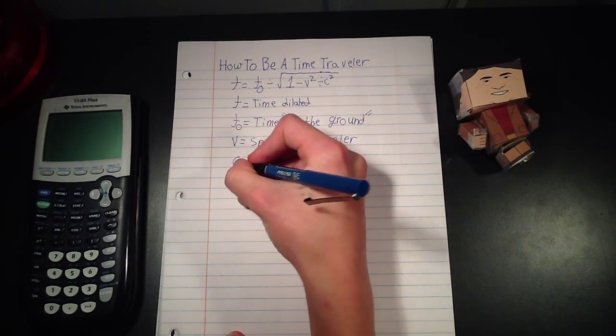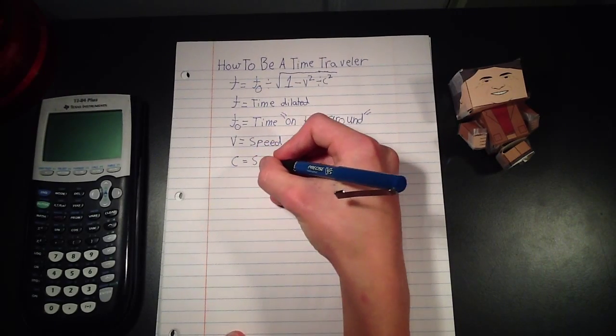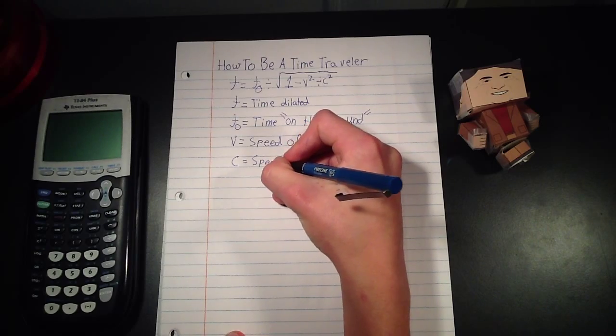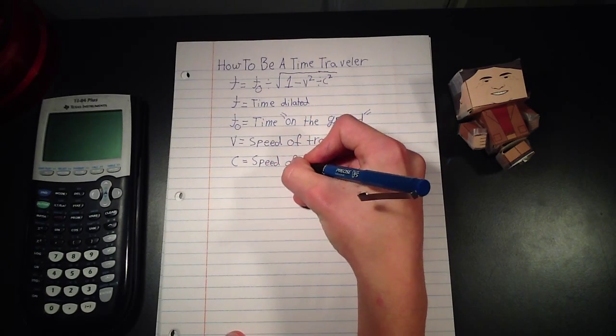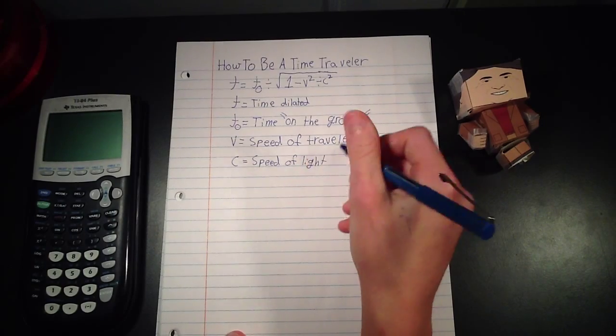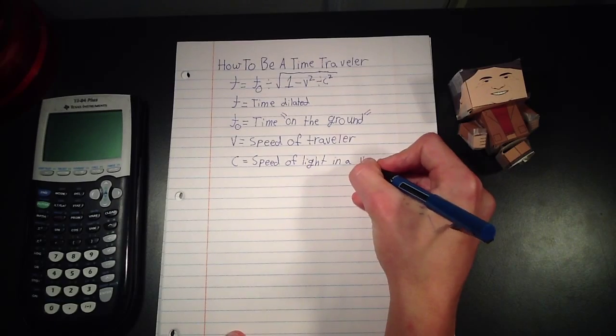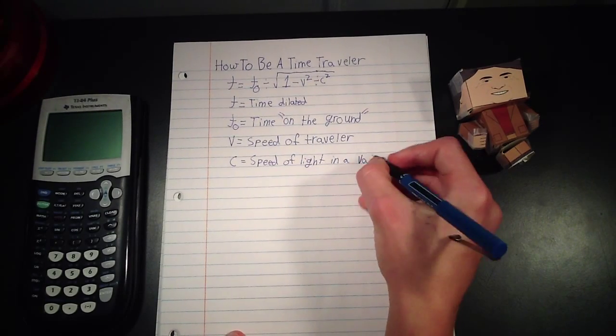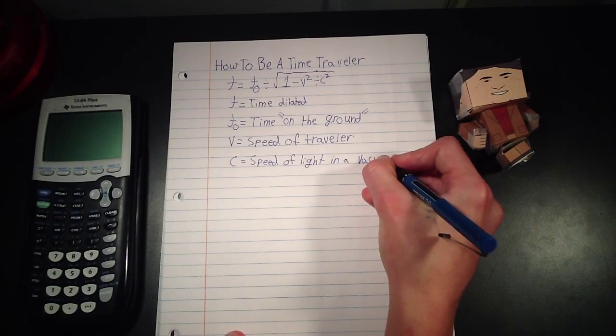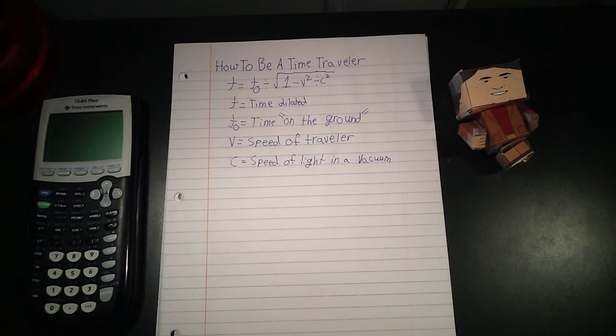And c is the speed of light in a vacuum, as we have already told you. And a vacuum simply means that there's nothing in the way to slow it down, like air. It's just out in the vacuum of space or in a vacuum chamber.